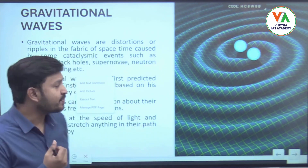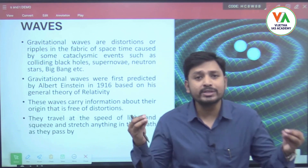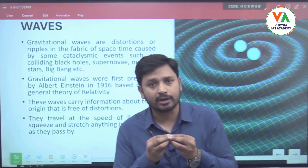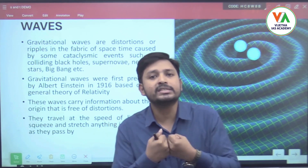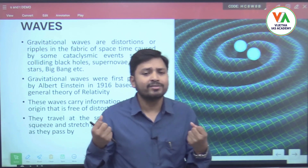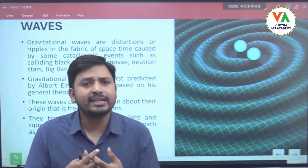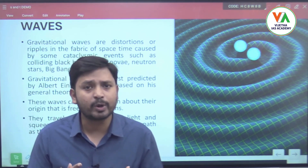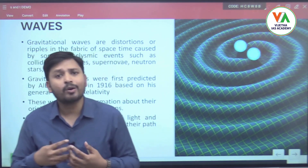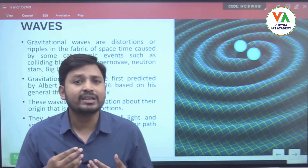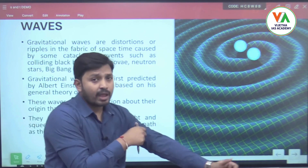For example, when two black holes come and merge with each other, or when a black hole and a neutron star merge, or when binary stars collide — during these events a huge amount of energy is released, generating waves called gravitational waves. These waves travel throughout space.